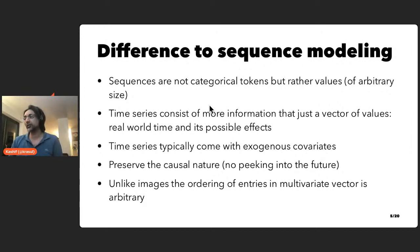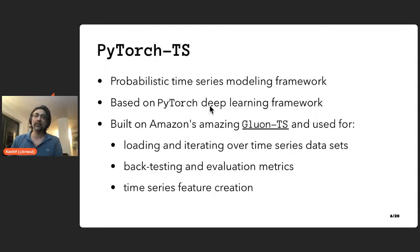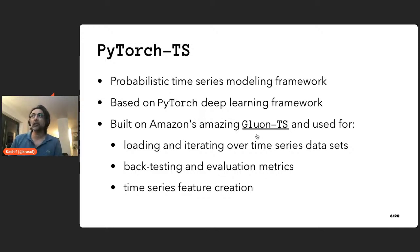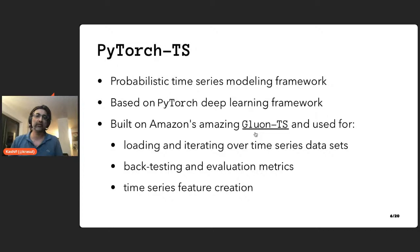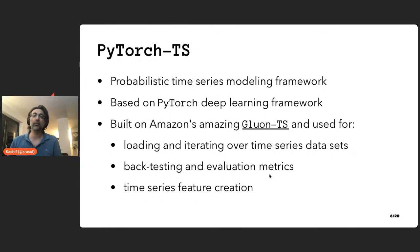That's what time series frameworks do — they handle all these intricacies. PyTorchTS is our probabilistic time series modeling framework focusing on deep learning-based models, built on PyTorch. It comes with univariate and multivariate models, and uses Amazon's GluonTS forecasting library for all the heavy lifting — loading and iterating over datasets, transformations, backtesting and evaluation metrics, as well as utilities for creating time and holiday features.